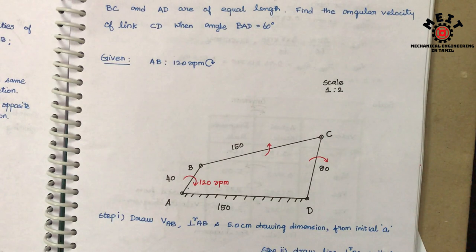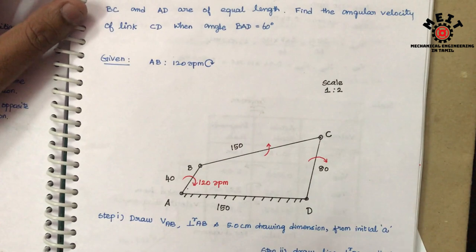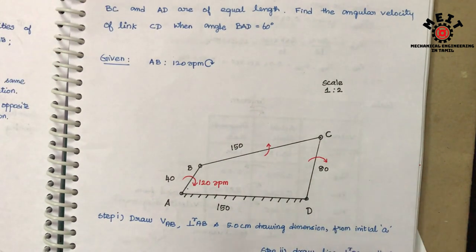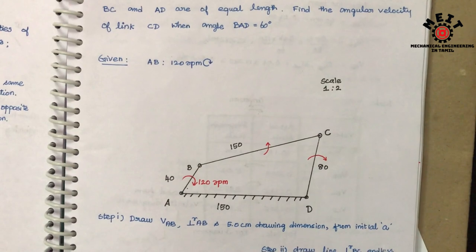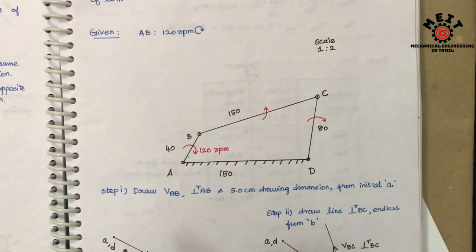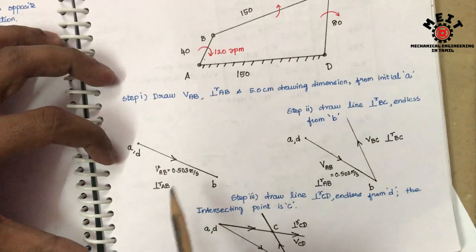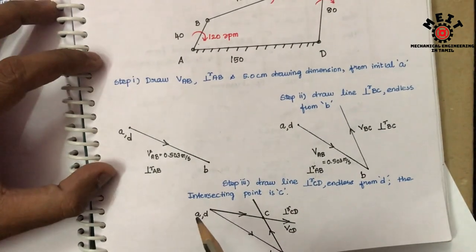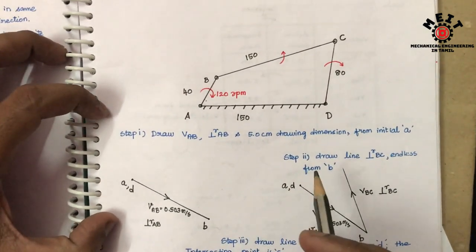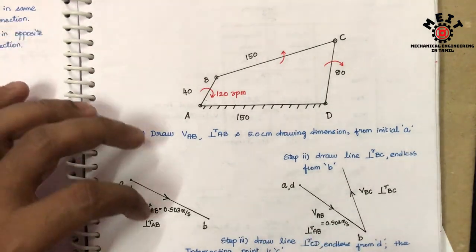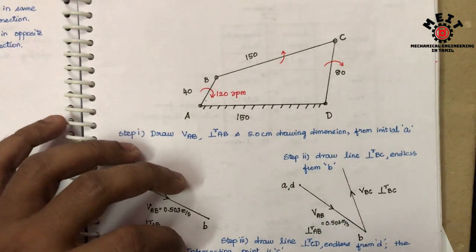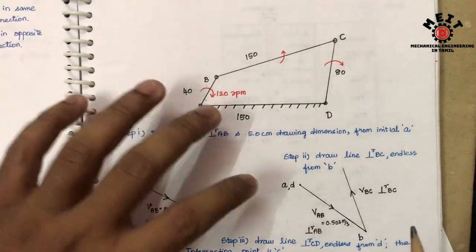Hello, in this video we need all the velocity values — all the links' velocity values. So, what do we do with the velocity diagram? The explanation video is already posted, you can check that video. Now we can directly go to the acceleration analysis.